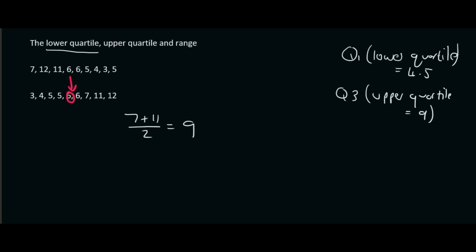This middle number divides the data into two halves. This number over here divides the lower half in half, and this number — between the 7 and 11 — divides the upper half in half as well. So we've cut the data at three points, giving us four sections: one, two, three, four. That's where we get the word 'quarter' from.